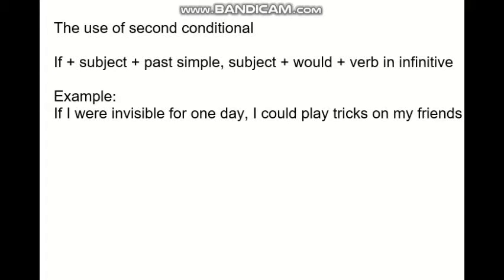Now, the use of the second conditional. The second conditional is used to talk about events that are unlikely to happen in the future. The composition of second conditional sentences is: if, more subject, more past simple, more would, more verb in infinitive. For example: 'If I were invisible for one day, I would play tricks on my friends'.